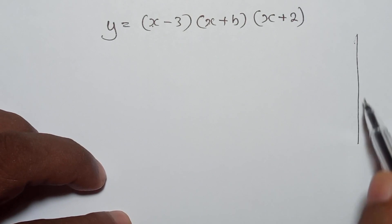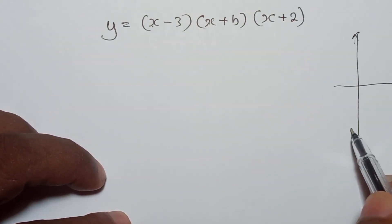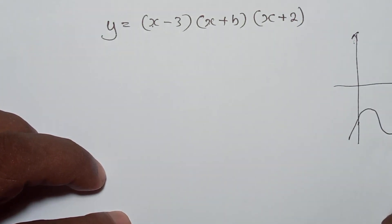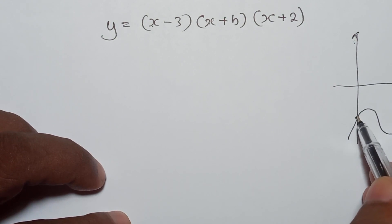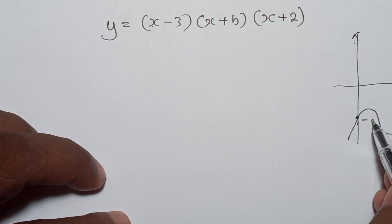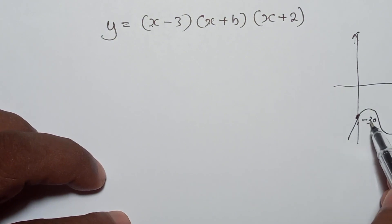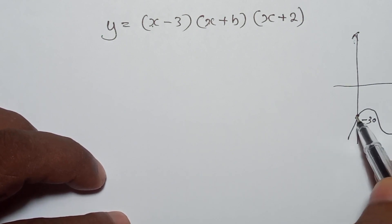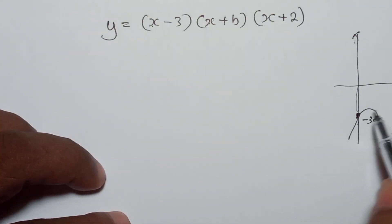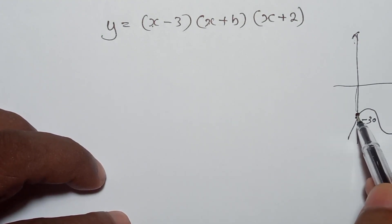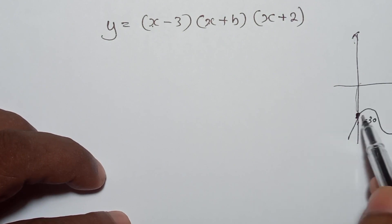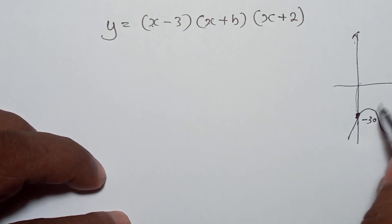When you have this graph, try to understand — it will cut the y-axis at this point. At that point, the y-axis value is minus 30, and the x value here is zero. Any graph when it cuts the y-axis, the x value will always be zero. So here y value is minus 30 and x value is zero.